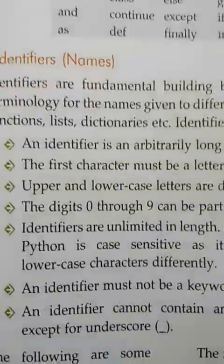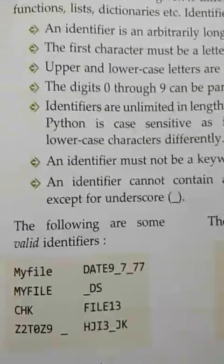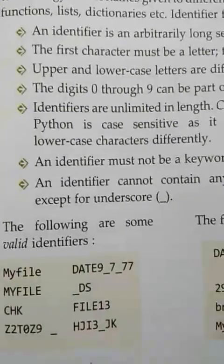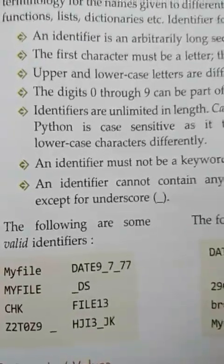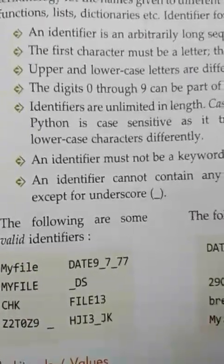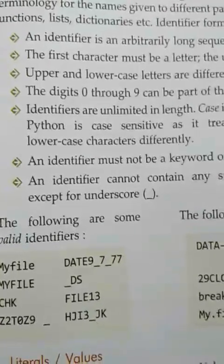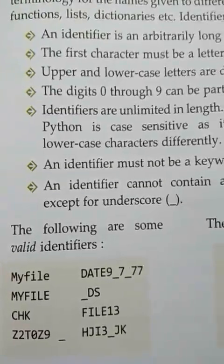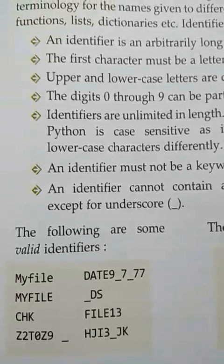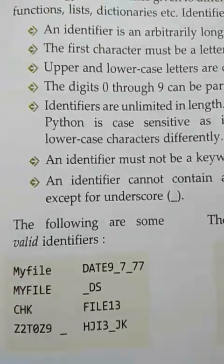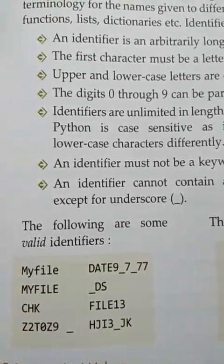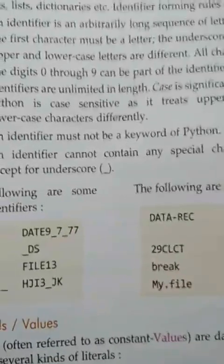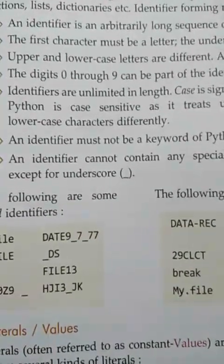There are some rules for identifiers. The name of an identifier should begin with an alphabet. So 'age' is a correct identifier, and 'is1' is also a correct identifier, but '1is' is not valid because an identifier cannot start with a digit. We can use uppercase and lowercase letters. Spaces are not allowed in identifiers; we can use the underscore sign, but special symbols are not allowed.